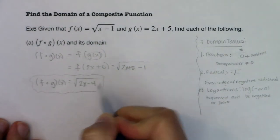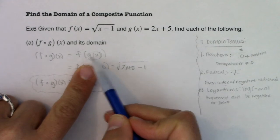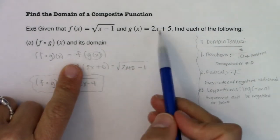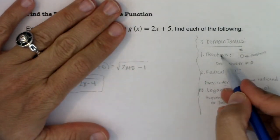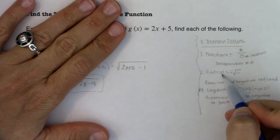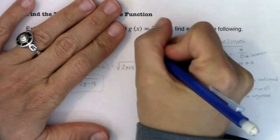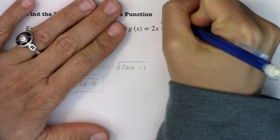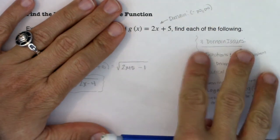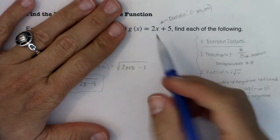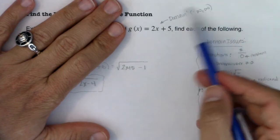But I have not addressed the domain yet. Start with your innermost function and work yourself out. So looking at g of x — did I have a fraction? No. Did I have a radical? No. Did I have a logarithm? No. So the domain of g of x was all real numbers, negative infinity to infinity. I had no restrictions because I didn't have a fraction, a radical, or a log. You can plug any number into 2x plus 5 and you'll get a y value back.